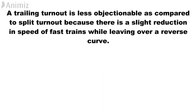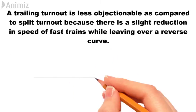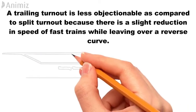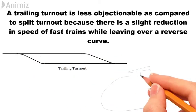A trailing turnout is less objectionable as compared to split turnout because there is a slight reduction in speed of fast trains while leaving over a reverse curve.